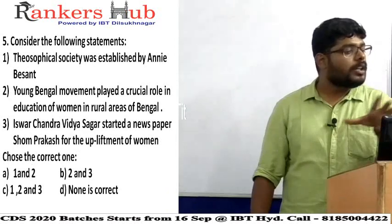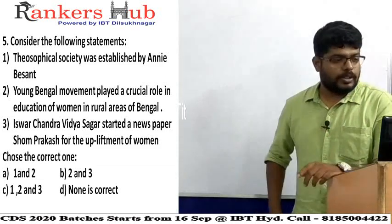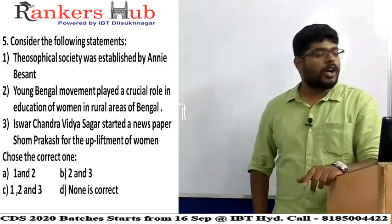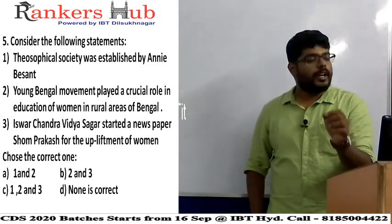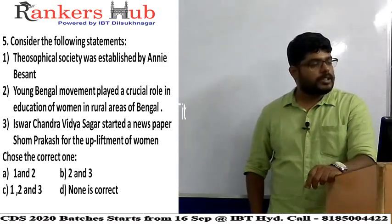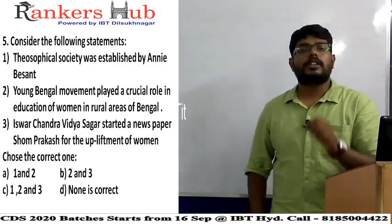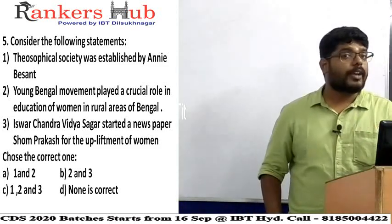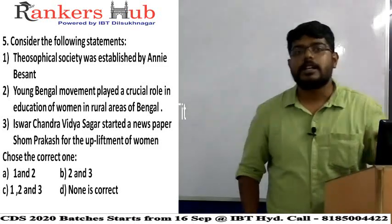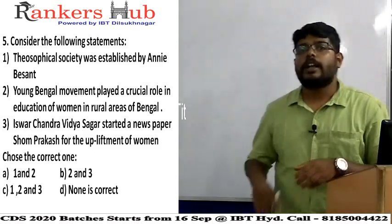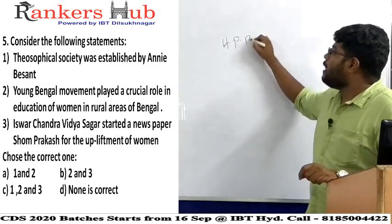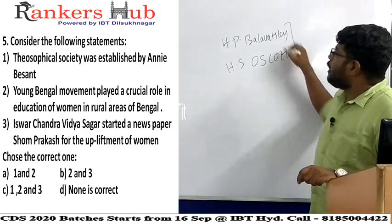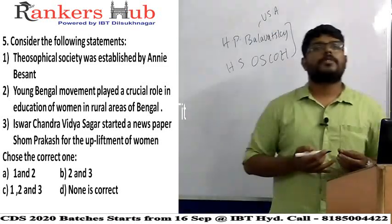Question five is based on social and religious movements in India. Statement one: Theosophical Society was established by Annie Besant. Statement two: Young Bengal Movement played a crucial role in the education of women in rural areas of Bengal. Statement three: Ishwar Chandra Vidyasagar started a newspaper called Shomprakas for the upliftment of women. The first statement is wrong because the Theosophical Society was established by H.P. Blavatsky and H.S. Olcott in the United States of America; in India it was established by Annie Besant.